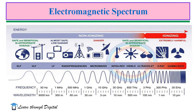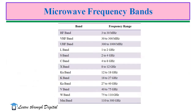Let's start with the topic of the Electromagnetic Spectrum. We will discuss the Electromagnetic Spectrum in detail in another video. It covers the entire range of frequencies of radiation, and there are two major categories: non-ionizing and ionizing radiation. The electromagnetic spectrum starts from very low frequency all the way to gamma rays. We are going to focus on the microwave frequency bands.